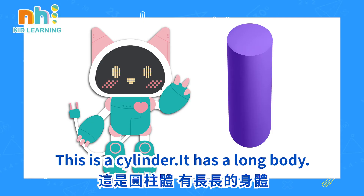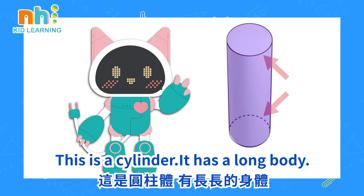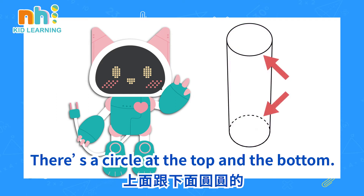This is a cylinder. It has a long body. There's a circle at the top and the bottom.